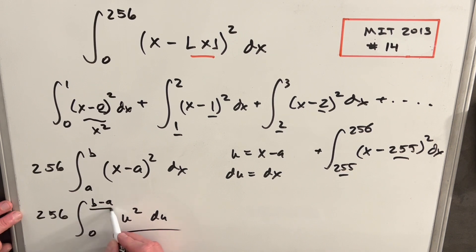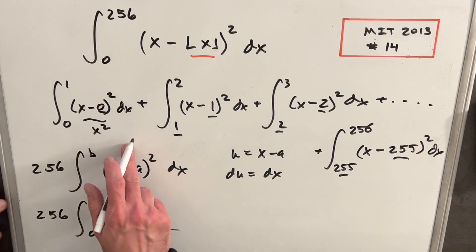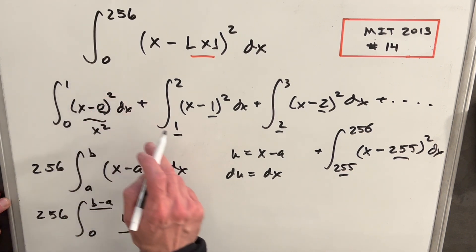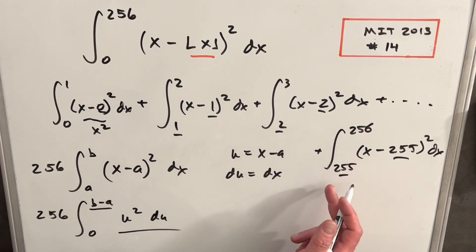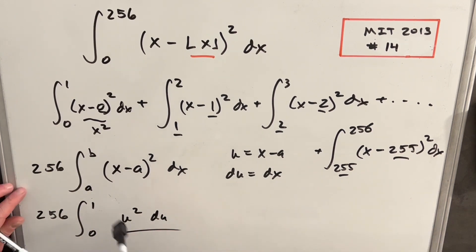We know how to do this. That's just the power rule. But what's b minus a? Well, we've set this up where our upper bound and lower bound always differ by 1. We've created it that way. So what I can do is just take this out. We'll call this 1, because it's going to be 1 in every one of these 256 integrals.